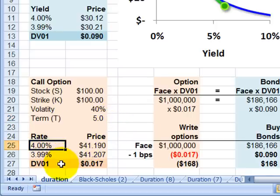So these are options on a non-dividend paying stock where the price is $100. Now, if the interest rate is 4% again, then Black-Scholes, the option pricing model, tells me that the price of this option is $41.19.